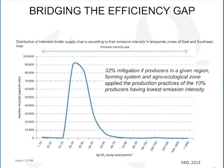Let's look at the statistical analysis. If you look at this graph showing the distribution of emission intensity in intensive broilers in East and Southeast Asia — one system, one region — you can see that emission intensity ranges from 15 to 20 kilograms of CO2 equivalent per kilogram of meat protein up to about 50 or 60. If we assume all producers in that system and region would apply the practices of the most efficient ones, we could reduce overall emissions by 32%, simply by applying practices already used in the same region and system.